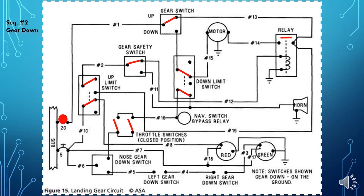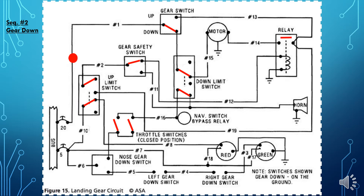As the aircraft approaches its landing site, the pilot will reduce power to slow the aircraft and descend. Prior to landing, the pilot will lower the landing gear by placing the in-cockpit gear switch in the down position. This allows current to flow from the bus, through the gear switch and down limit switch to the gear motor and then ground, turning the motor on and lowering the gear.